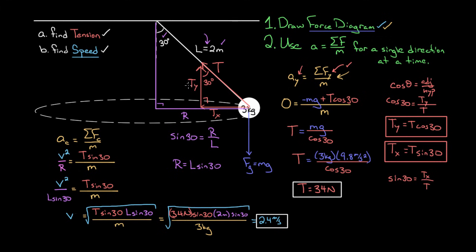To recap: when solving a sophisticated centripetal force problem, draw a quality force diagram, then use Newton's second law for a single direction at a time — only plugging forces from that direction into the net force. If the direction is centripetal, use v²/R for acceleration, and only plug in forces pointing toward the center. Make sure R is the radius of the circle the object actually travels in.